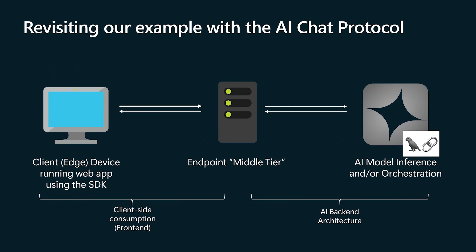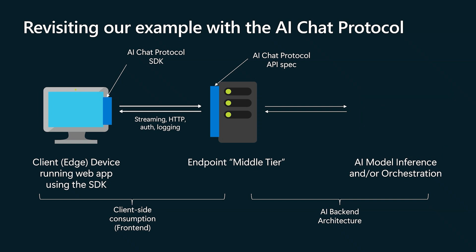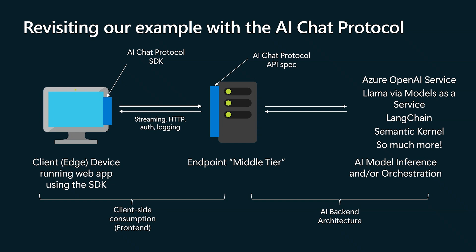Let's revisit our earlier example with the AI chat protocol. We first ensure our middle-tier endpoint adheres to the AI chat protocol API spec, giving us a consistent way of communicating with AI backends and consuming their responses. Once we have the middle tier following the API spec, we can update our web application to use the AI chat protocol SDK. With these two pieces in place, we can enjoy seamless streaming, HTTP, auth, logging, and more — making client-side consumption much simpler. The right side of the diagram can then look like whatever we want: Azure OpenAI Service, LLAMA, or any other models through Azure AI Models as a Service, combined with LangChain or Semantic Kernel and more.